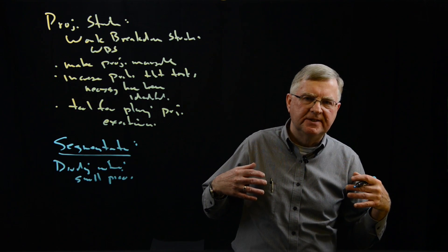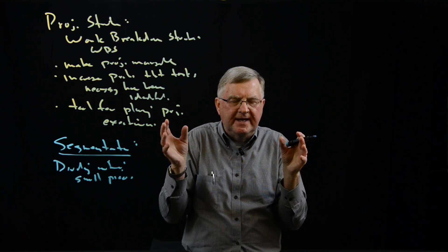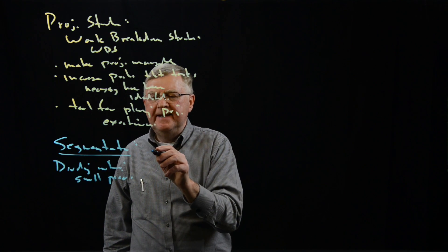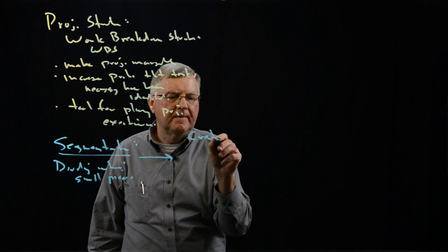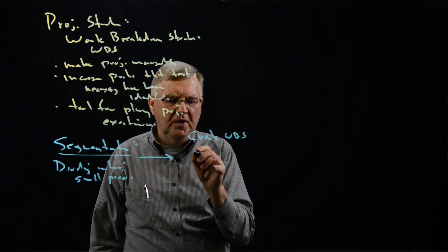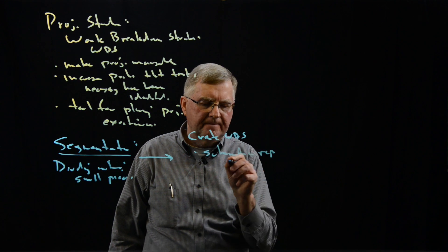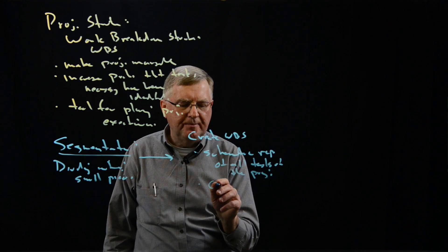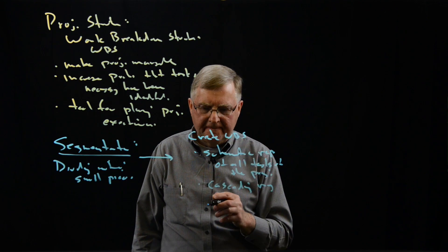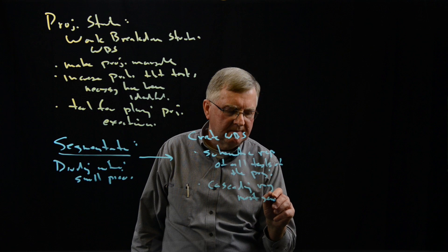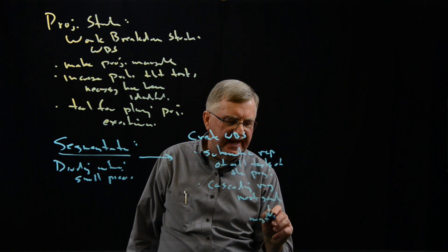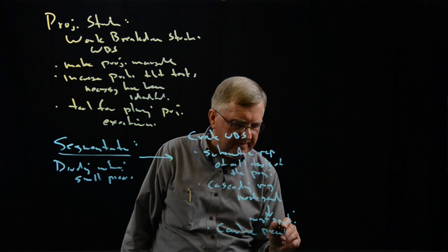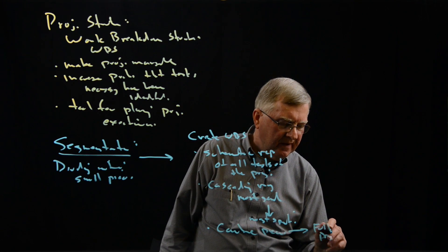This is something the project manager does — takes a look at the entire project, determines how to segment it, how to break it up into pieces, and then plans the pieces individually to gain information. We then take the pieces to create the Work Breakdown Structure, which is a schematic representation of all tasks of the project. It's a cascading representation starting from the most general downward to the most specific task. And when we combine all pieces, we end up with a view of the full project.